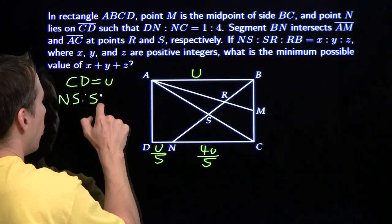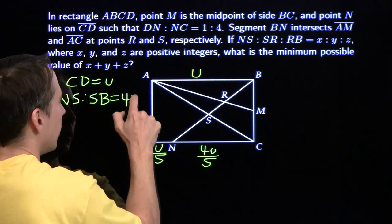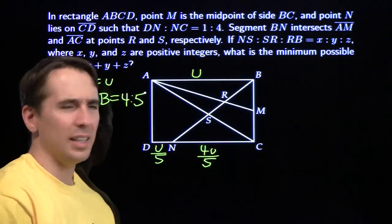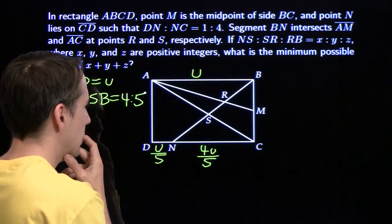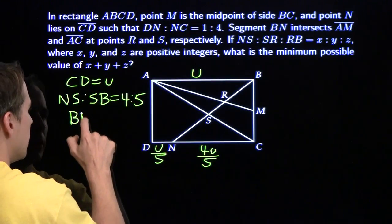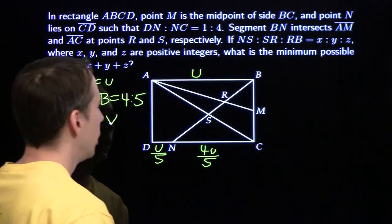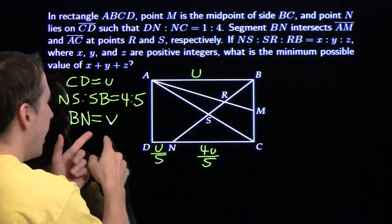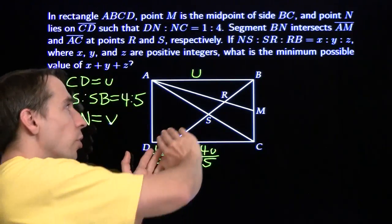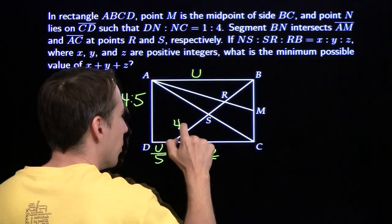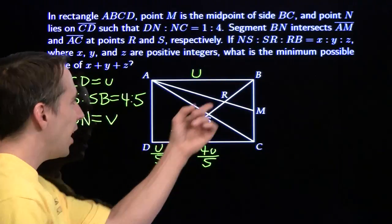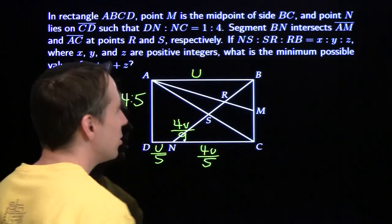Write that down — that's got to be important. That tells me something about this segment, but the full segment NB includes both pieces. I'll give the full length NB a variable, calling it V. Since NS to SB is 4 to 5, NS is 4 ninths of the whole thing — so NS is 4V over 9. And the remaining piece SB is 5V over 9. But I need to break that into two smaller pieces.